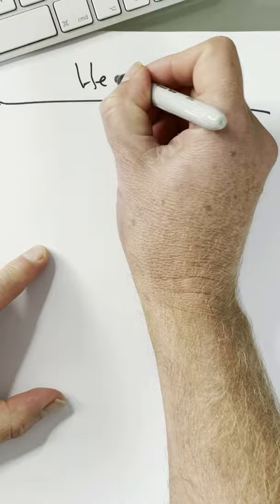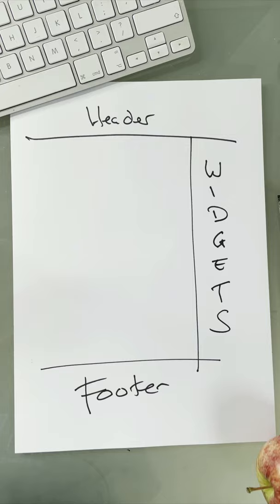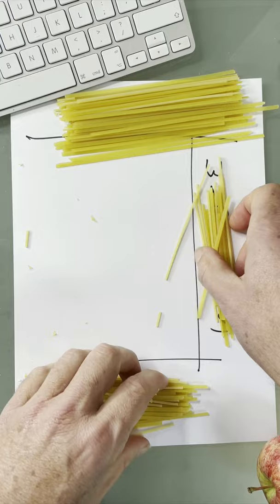First, a little history. In the beginning we had WordPress themes. These themes had a header, footer, and widgets. The menus had their own system, the widgets had their own system, and they were all made out of spaghetti.